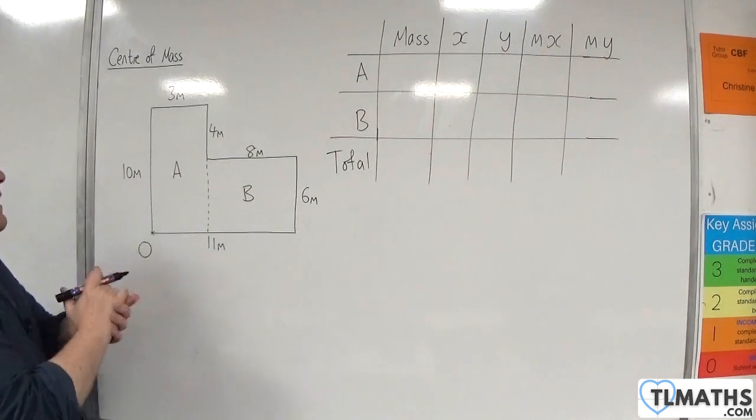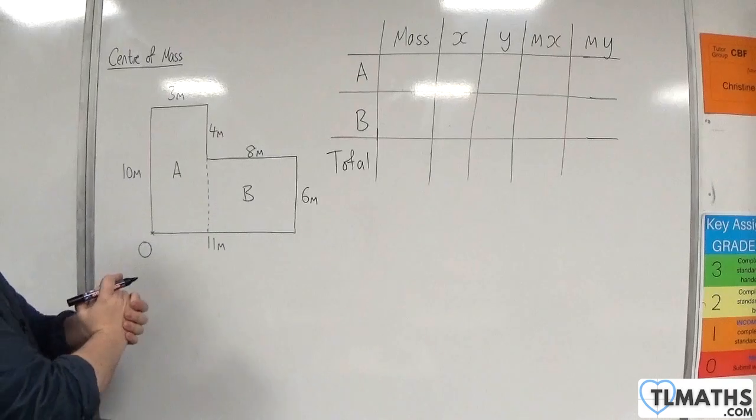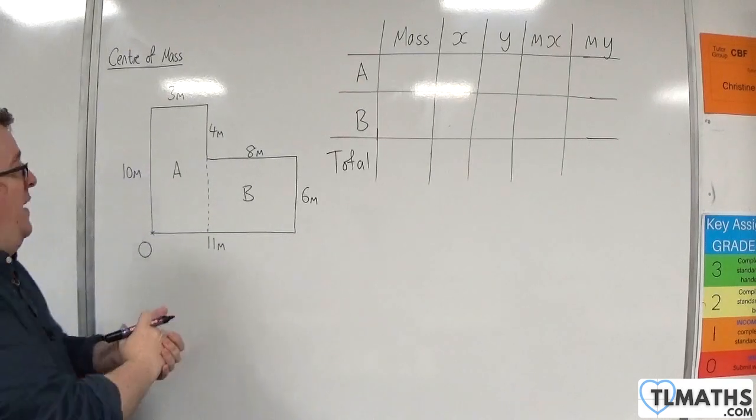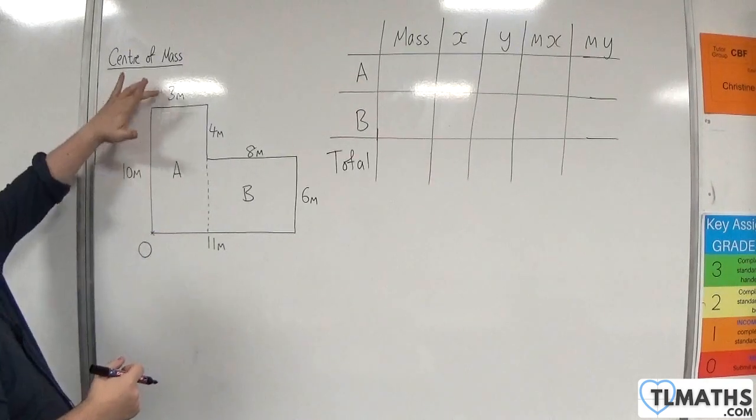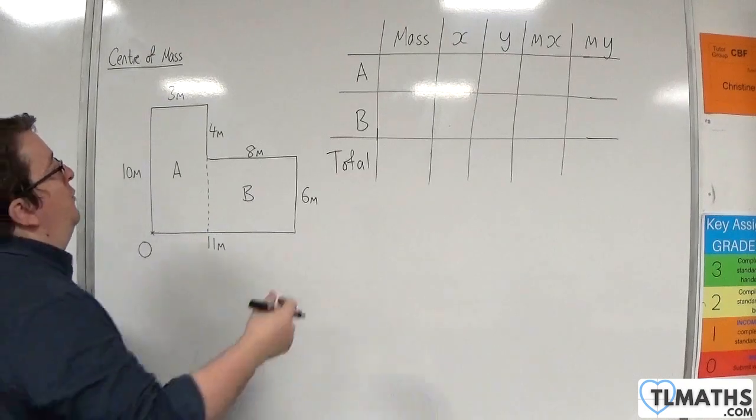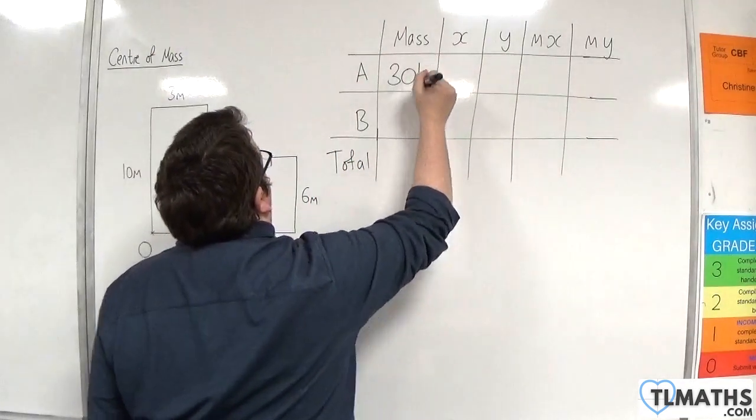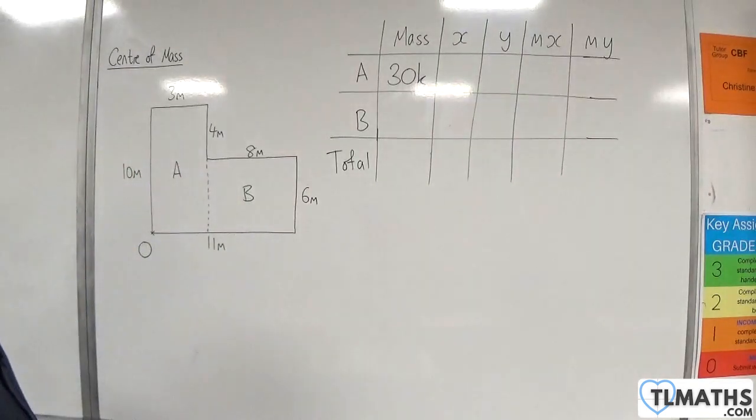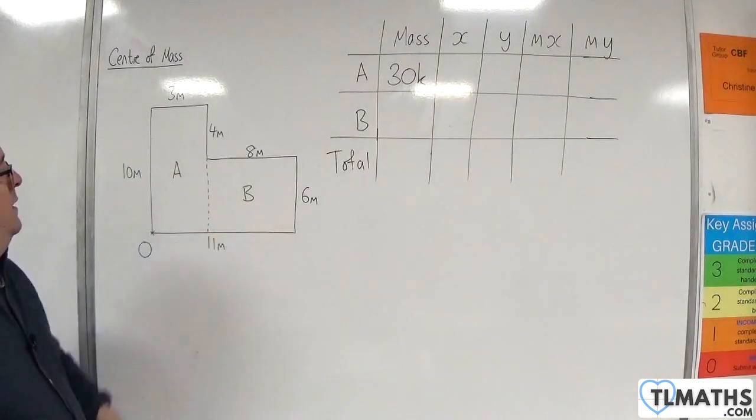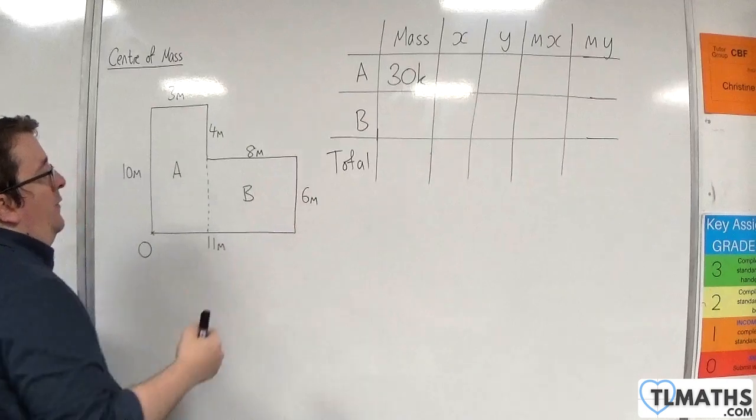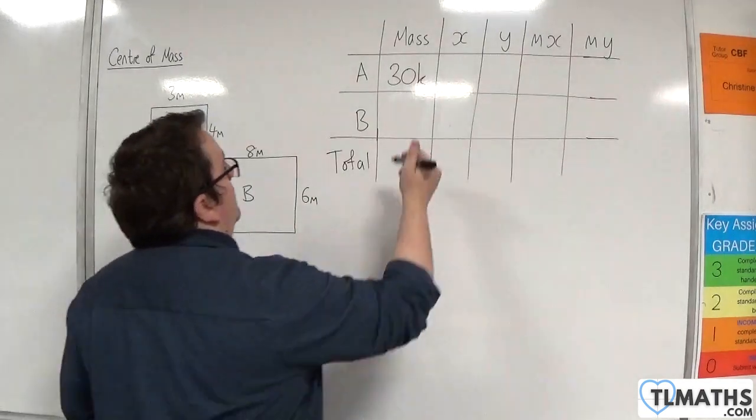So for laminar A, its mass is, well we know that it's proportional to its area. So 10 times 3 is 30, so we can write its mass as 30K. And for B, it is 8 times 6, so that would be 48K.